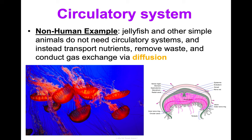Reproductive systems differ significantly across animals. Kangaroos and other marsupials have fascinating unique reproductive systems. Female kangaroos actually have two vaginas — both open externally through the same opening but lead to different areas of the uterus. Males have a corresponding two-pronged penis to match the two vaginas.